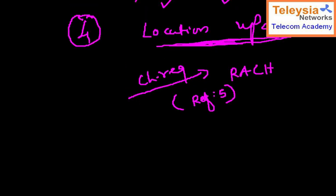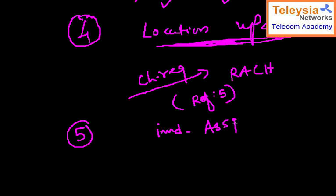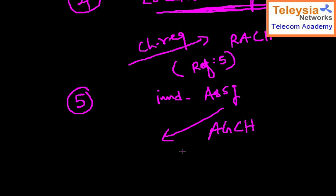When you access the RACH, you must provide a reference number — like a token number. You send a Channel Request on the RACH. That is the fourth step: accessing the network. The fifth step is receiving the answer from the network, which comes as an Immediate Assignment message on the Access Grant Channel (AGCH).